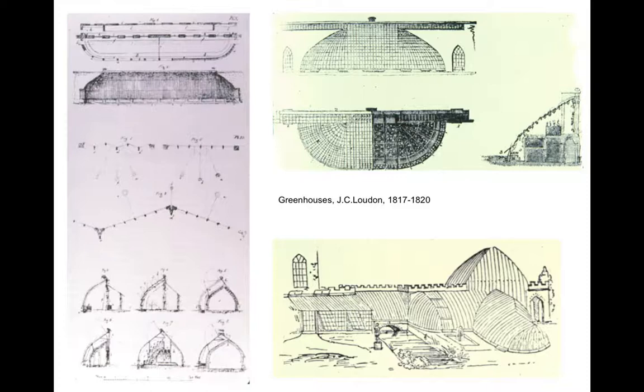Loudon designs a house for himself where he can show a potential client all of his different systems — he can make a walk through the house pointing out, well, here we can do a dome, or we can do a wall, or we have these kinds of fabricated pieces that we can do this or that with. The one thing that Loudon is really famous for is ridge and furrow glazing. Rather than just having a smooth surface of glass, what he will do is tilt the glass up to catch the morning sun earlier and also to hold the sunset as late as possible, in order to get as much of the daylight into the space. Ridge and furrow glazing also drains itself much better than a flat piece of glass.